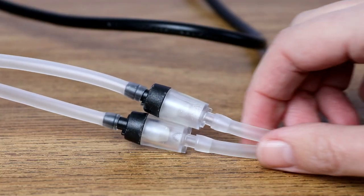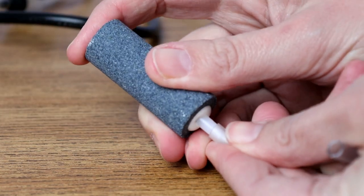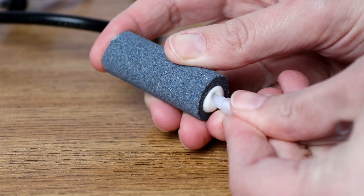And then attach the rest of the line onto the clear side of the valve. Do this for both sides, and then to the other end of the airline you can attach the air stones and we are all set to go. You can plop these into the water, switch on the pump and we will see how well it does its job.